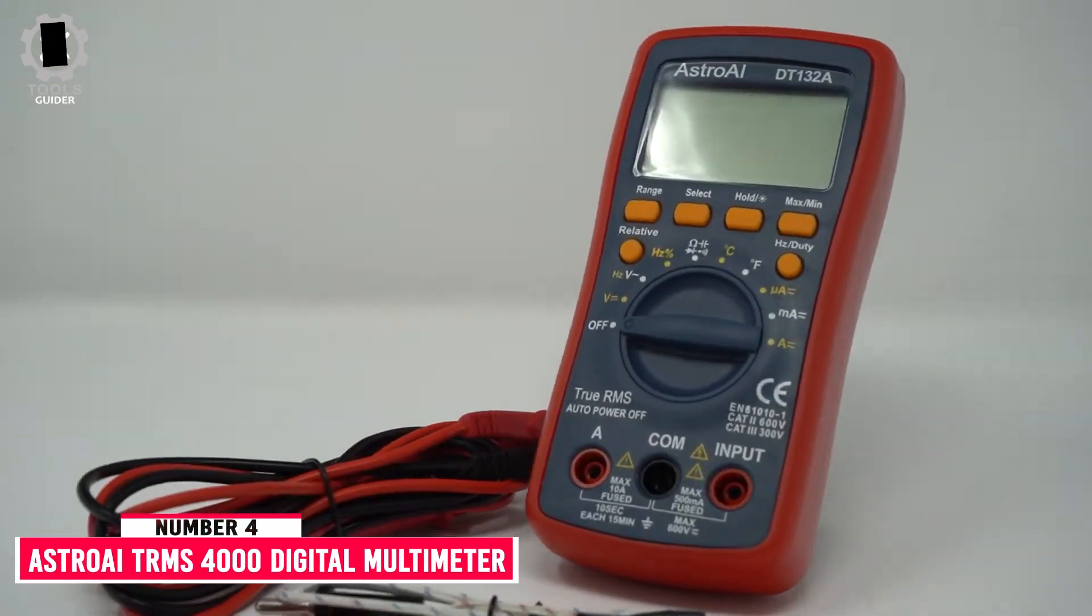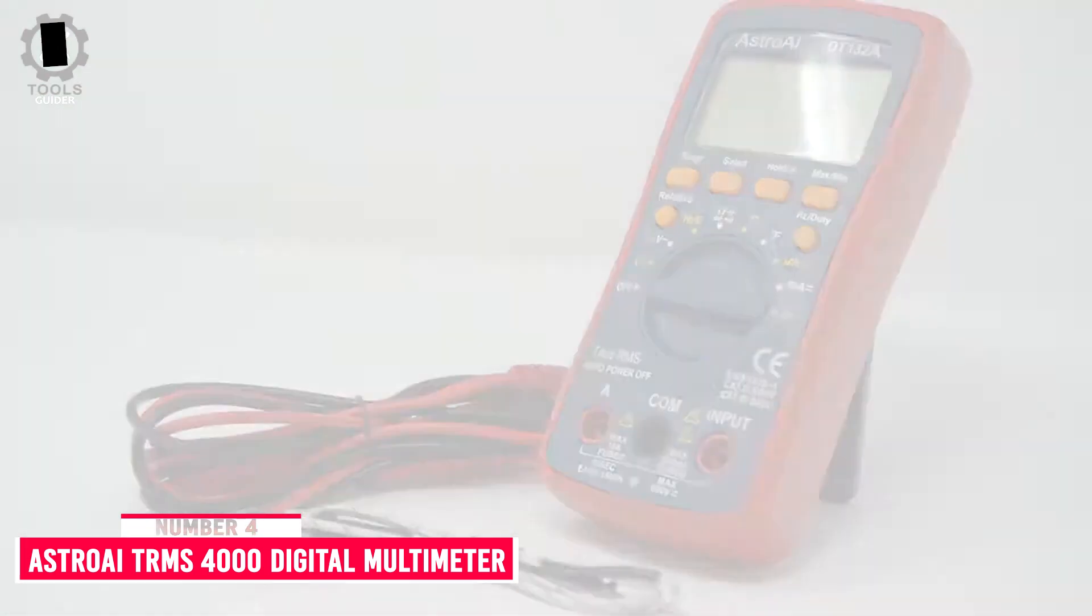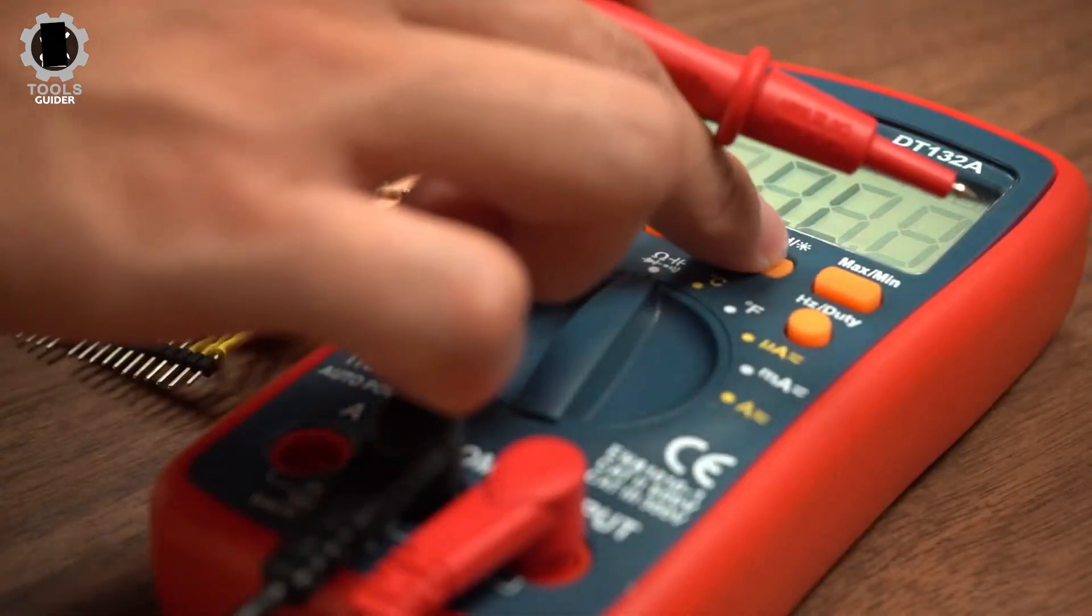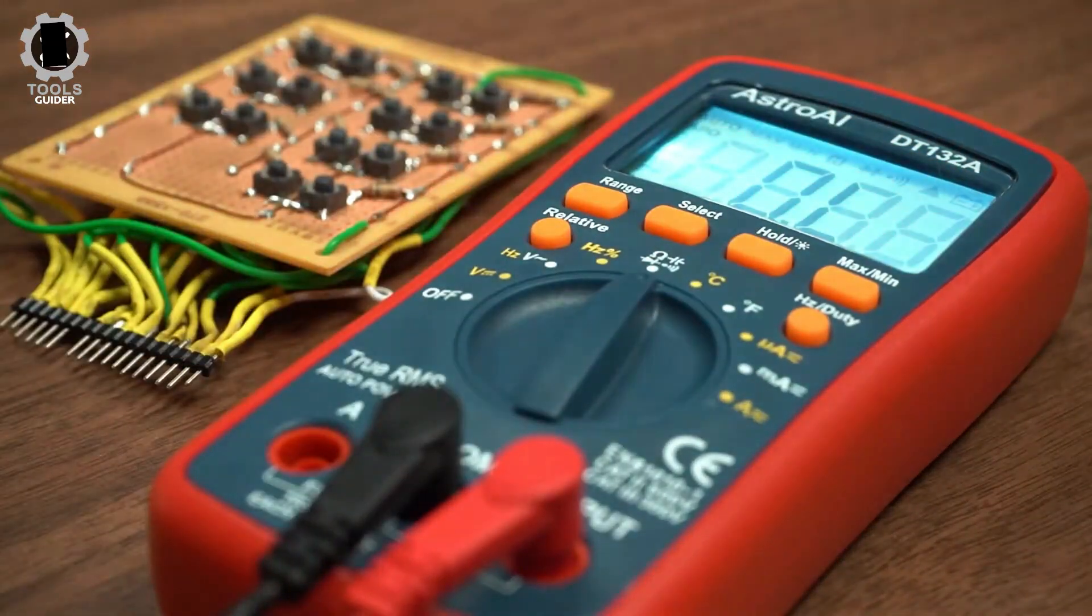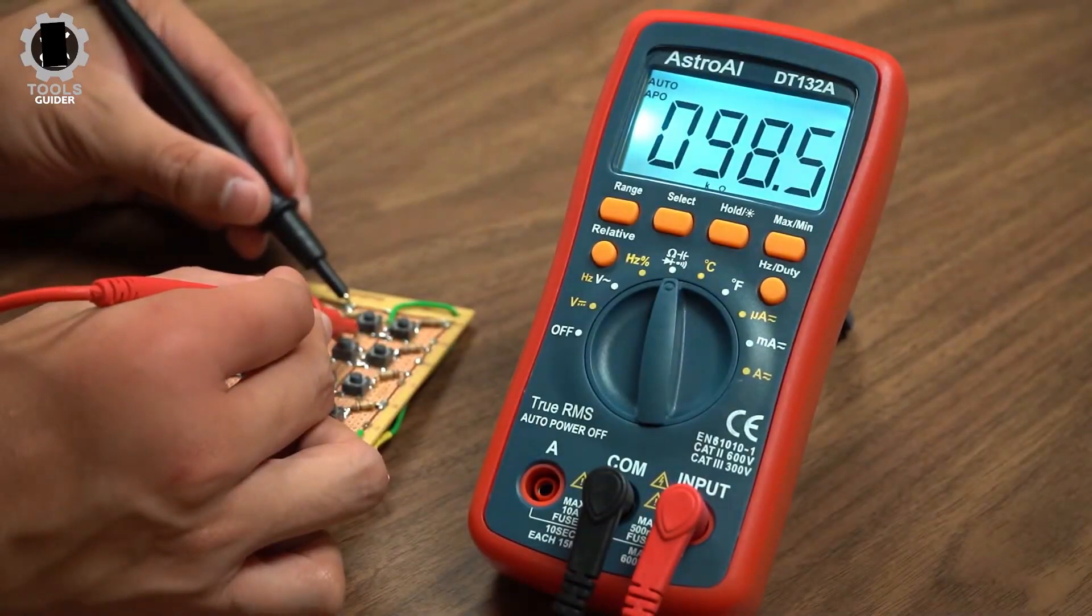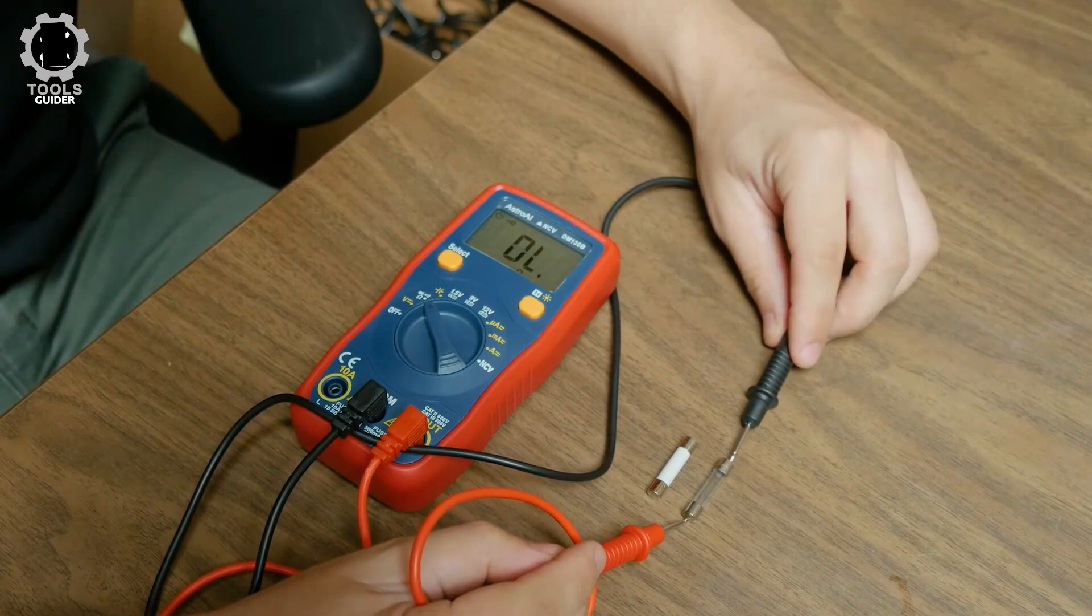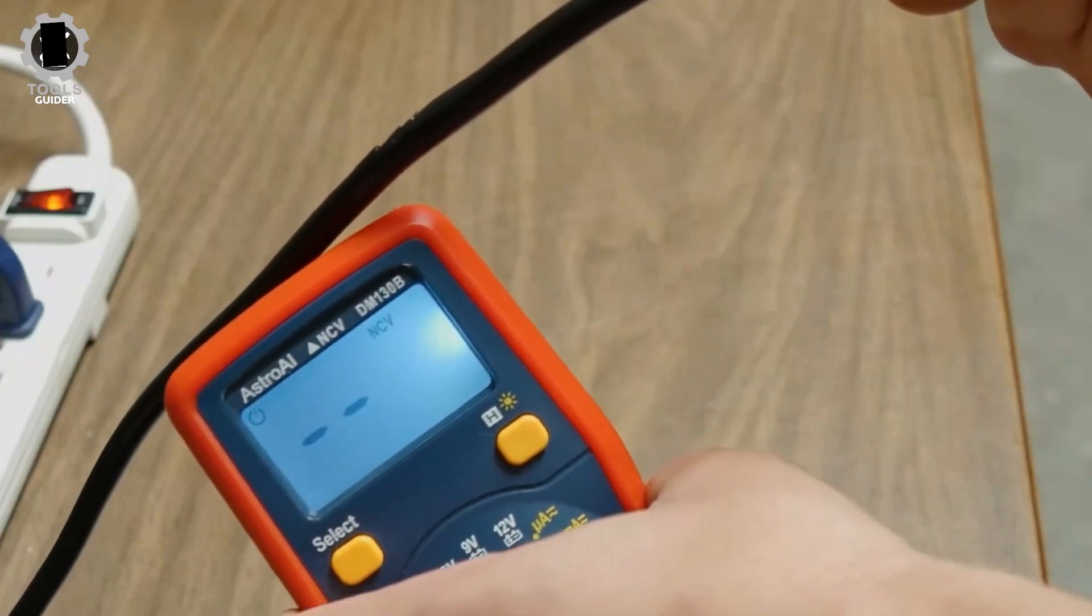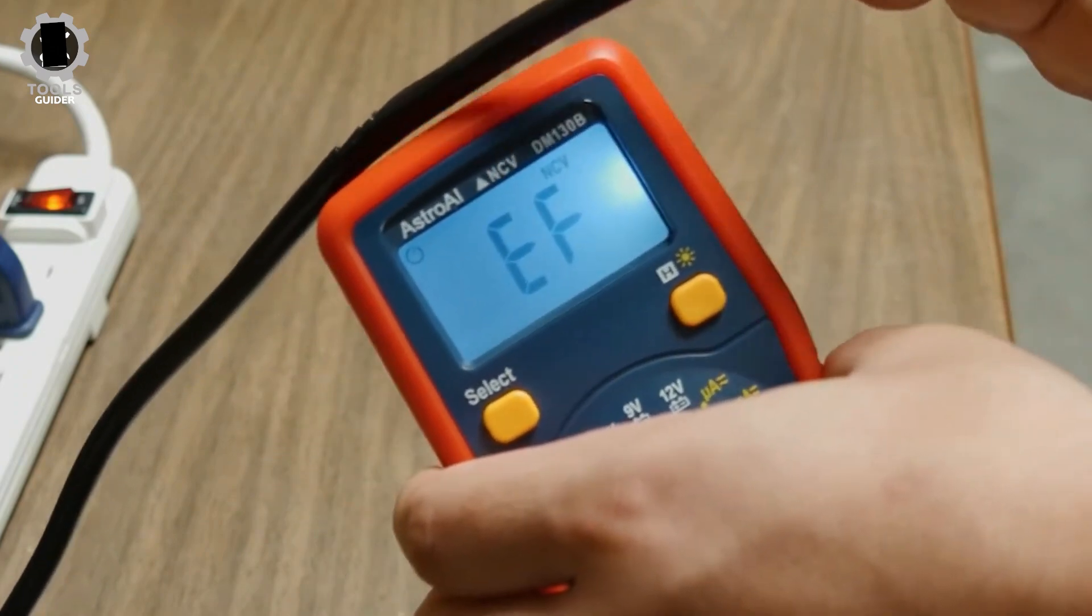Number 4. Astro AI TRMS 4000 Digital Multimeter. The Astro AI TRMS 4000 Digital Multimeter ships with a 9V battery and includes multiple functionalities intended to maximize battery life, including a low battery indicator and an auto shutdown feature that powers down the unit after 15 minutes of inactivity. It accurately measures both AC-DC voltage and AC-DC current, among other useful metrics.